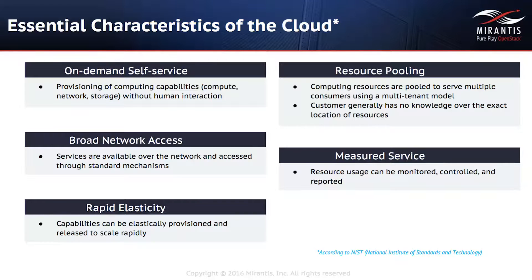The third characteristic of a cloud is what we call rapid elasticity. Workloads change in terms of utilization once they've been deployed in the cloud. As more and more users hit an application, there needs to be a mechanism that provides elasticity — where you can scale out and scale back as needed, adding instances of the application and removing instances as the workload fluctuates through its lifecycle.